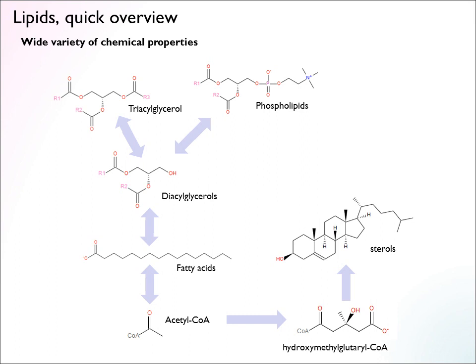All lipid synthesis starts from acetyl-CoA. Acetyl-CoA can go into two major branches: the fatty acid branch or the sterol branch. Fatty acids are really a kind of polymer of two-carbon units, where acetyl-CoA is repeatedly polymerized to build up a long tail which is hydrophobic. There's a carboxylate group towards the end which is charged or polar, making these what's known as amphiphatic species.